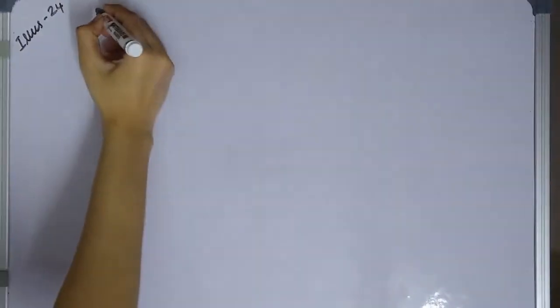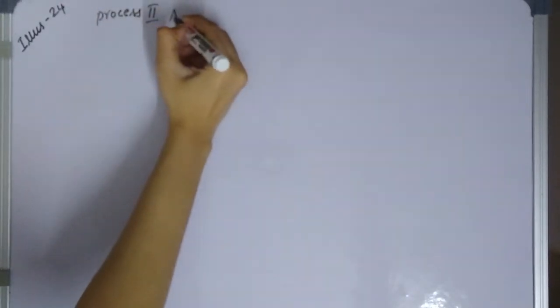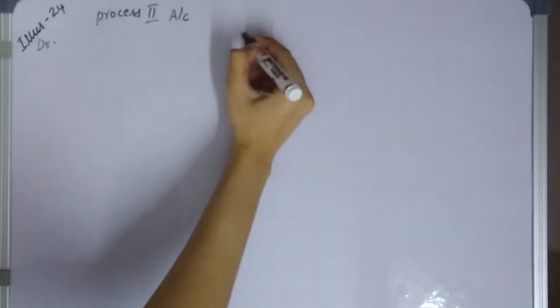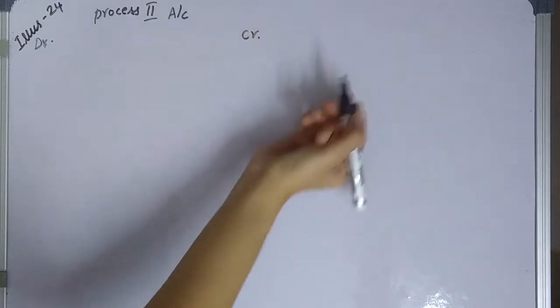Now let's set up the Process 2 account with debit and credit columns.